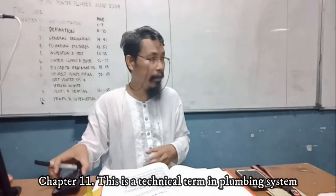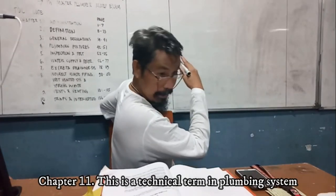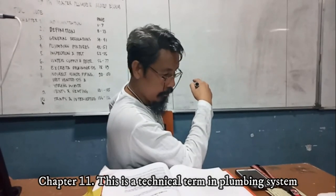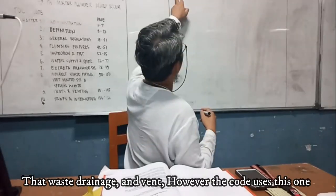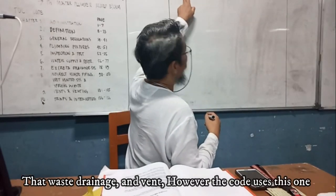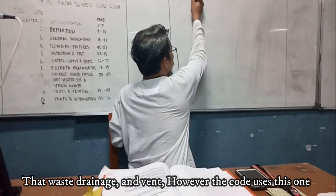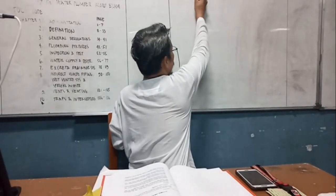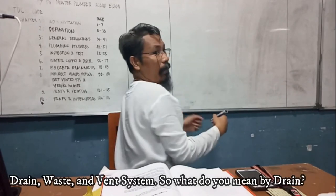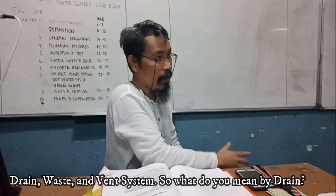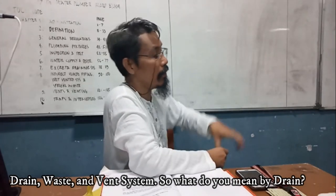Chapter 11. This is a technical term in plumbing systems: Waste, Drain, and Vent. However, the code uses this one: Drain, Waste, and Vent system — DWV system. So, what do we mean by drain?